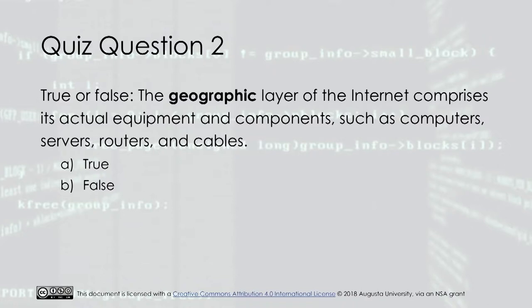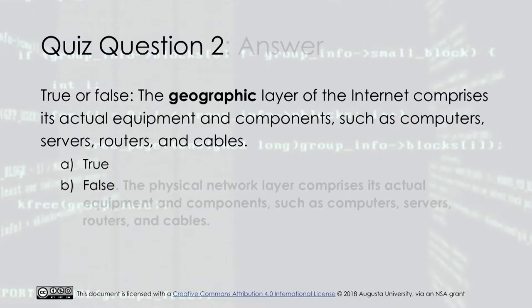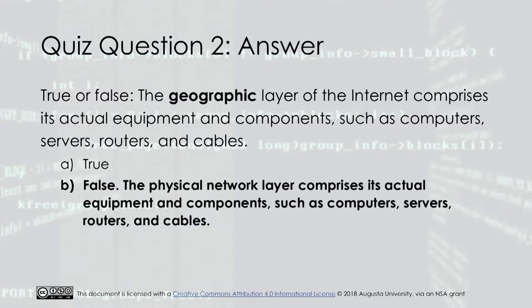Quiz question two: True or false — the geographic layer of the internet comprises its actual equipment and components such as computers, servers, routers, and cables. The answer is false. It is the physical network layer that comprises its actual equipment and components such as computers, servers, routers, and cables.